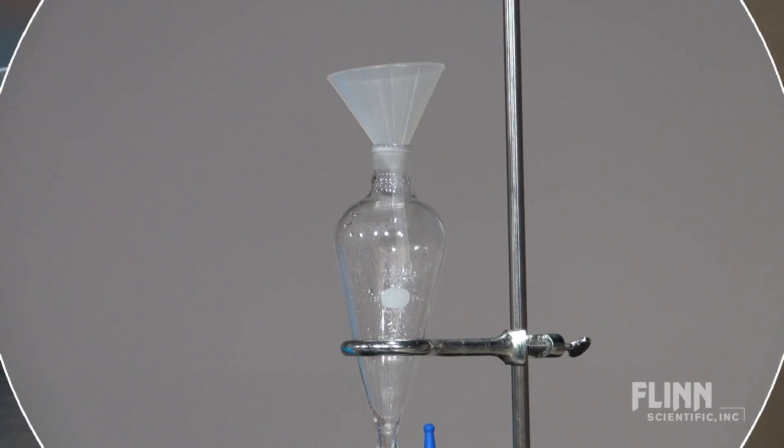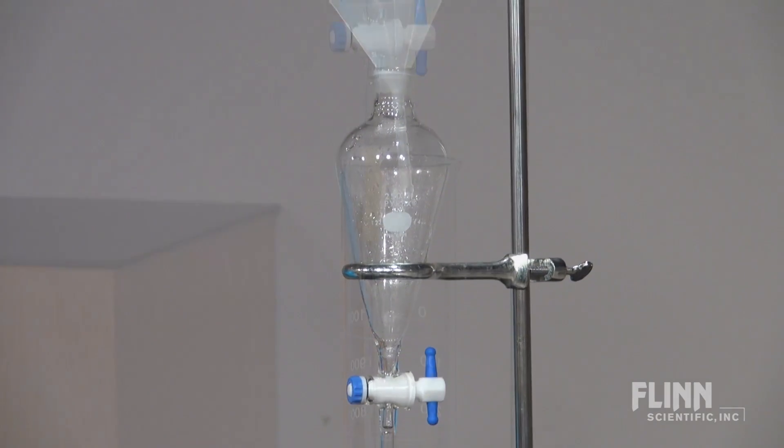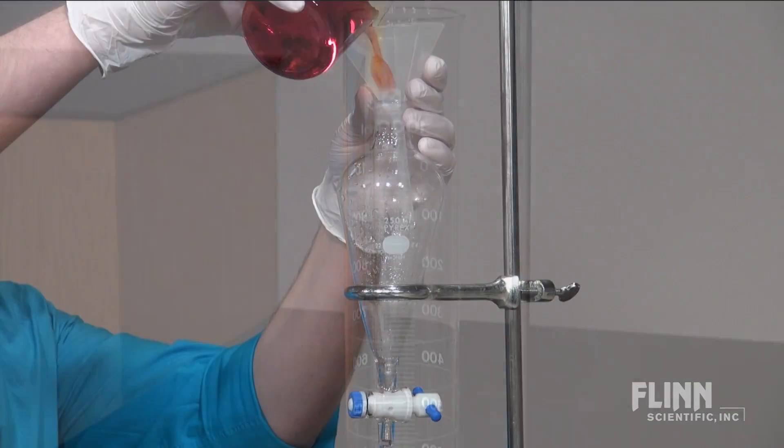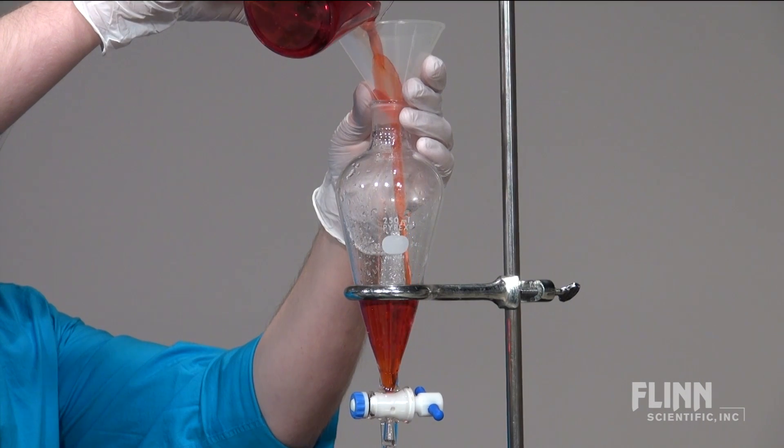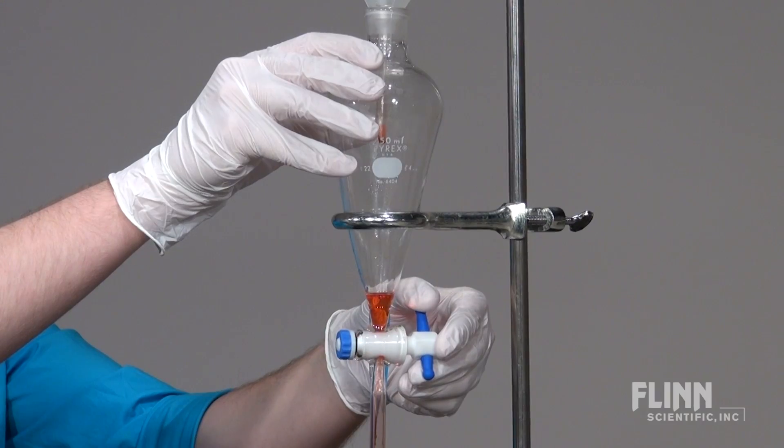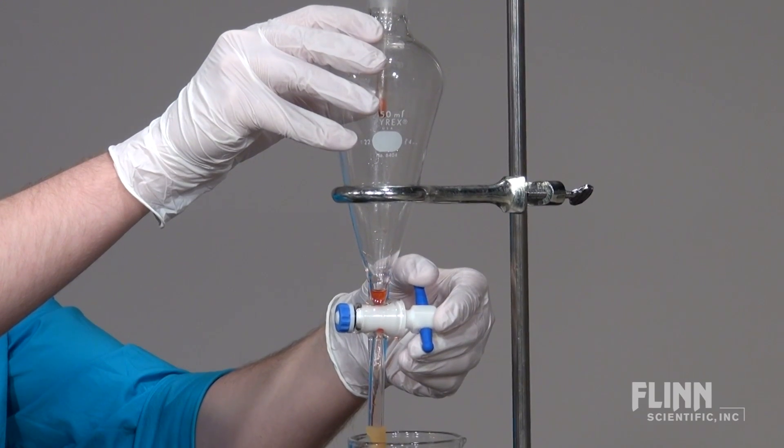Use a separatory funnel and glass tubing to fill the tall cylinder with the least dense solution - the one with the smallest concentration of sugar. When a small amount of liquid is at the bottom of the funnel, close the stopcock.